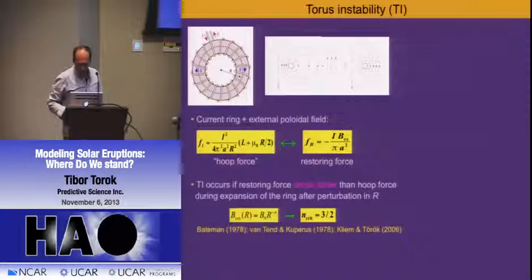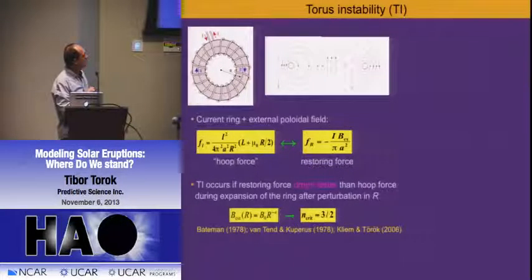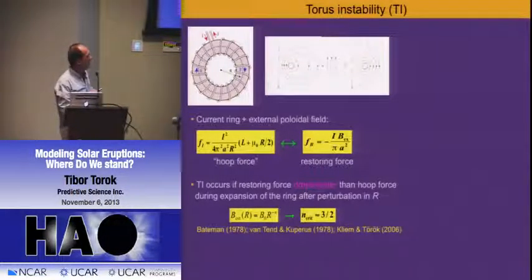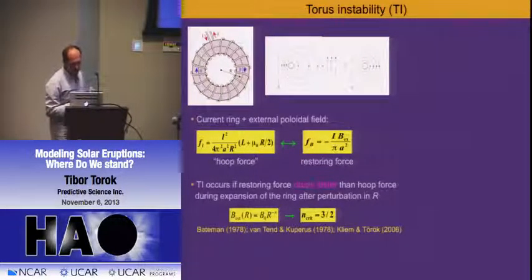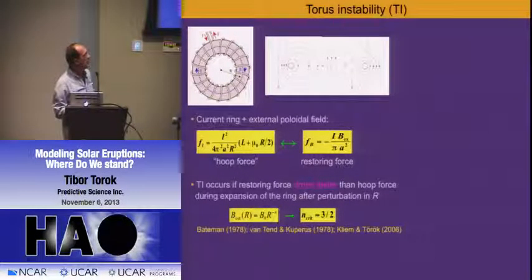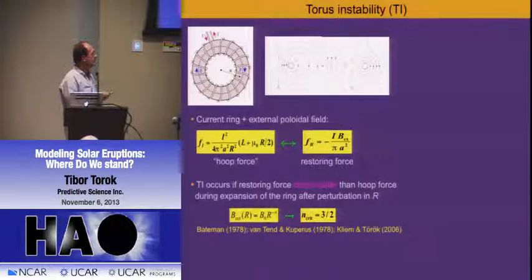People have looked at this, and you can define a decay index—a critical drop of these external fields. If the field drops fast enough at a certain height, then the instability can occur. On the sun, this is a function of height: the steepness of this ambient field changes as you go higher up. So if you manage to lift your filament or flux rope up to the height where you reach this critical decay index, then this instability can occur. Otherwise, not.